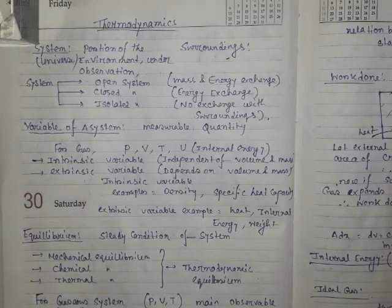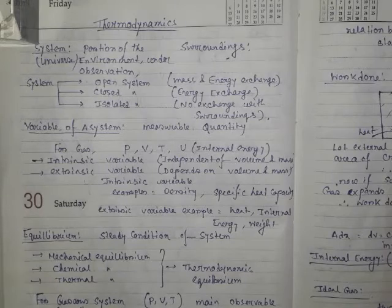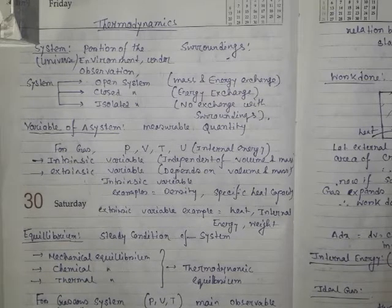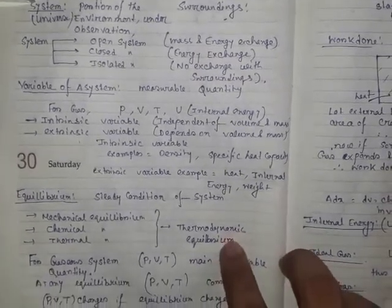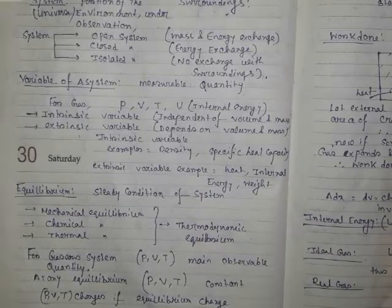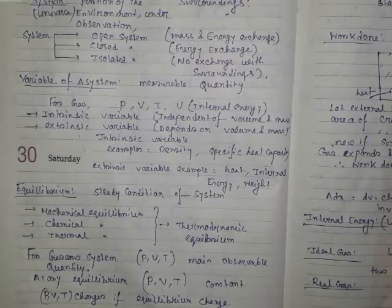To understand why we are interested in variables, we first need to learn about equilibrium. Equilibrium is a steady condition of a system — meaning the variables in the system are not changing with time. Those variables are fixed with time — that is called equilibrium.